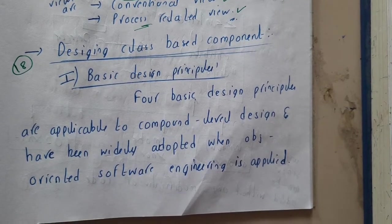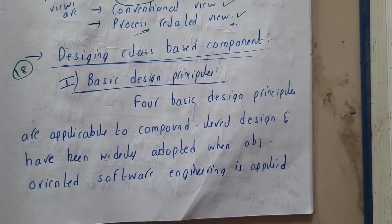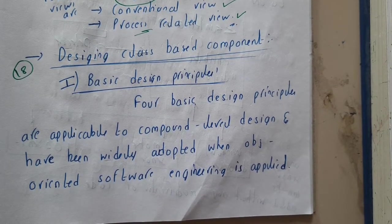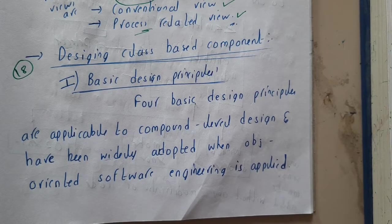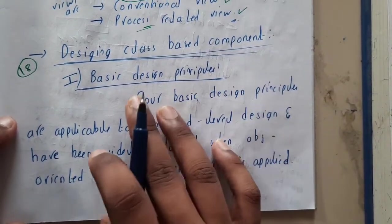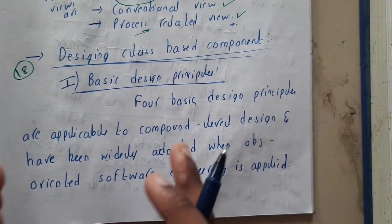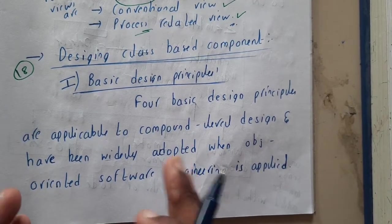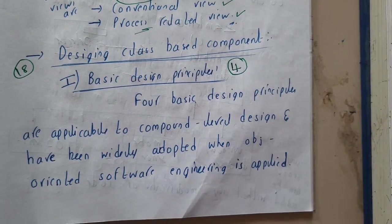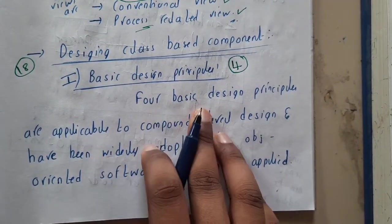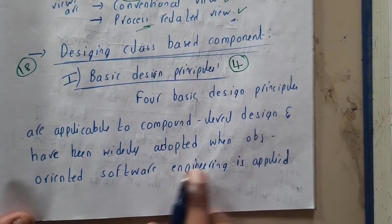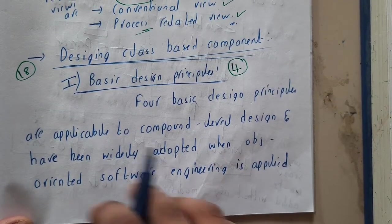In this lecture, let us go through the steps that need to be followed while designing a class-based component. Basically, whenever you're designing a component you will be following these basic steps — some kind of principles. There are mainly four basic design principles, which are applicable to component level design and have been widely adopted when object-oriented software engineering is applied.